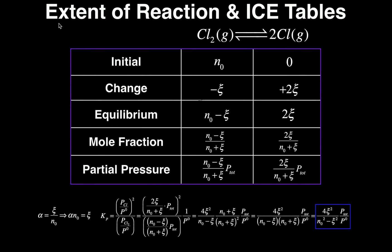We've been talking a lot about equilibrium and free energy in the past few videos. Now we're going to do an application of that, and you've actually seen this in general chemistry, but it was called something different. In general chemistry it was probably called an ICE table — initial, change, and then the equilibrium concentration or pressure. But in the physical chemistry course, it's typically referred to as the extent of reaction.